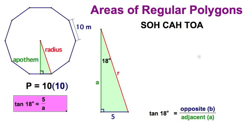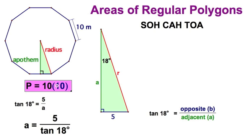Now, I know that the tangent of 18, opposite 5 over adjacent a, I'm solving for the a. In this case, I'm going to switch these around. We know with our means extremes that we can switch the a and the tangent of 18. So now I have an expression for perimeter and for the apothem.